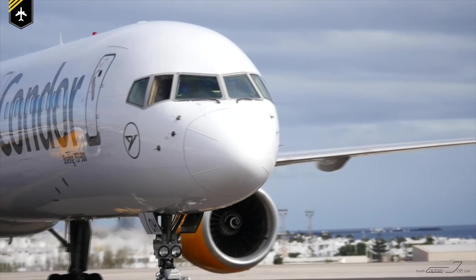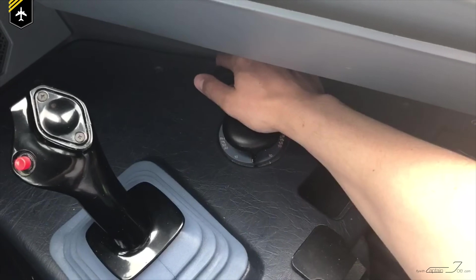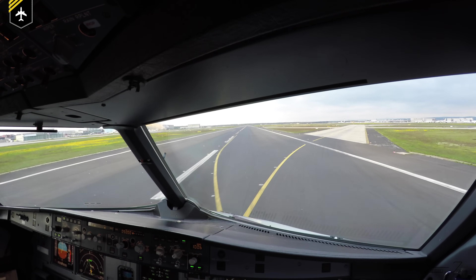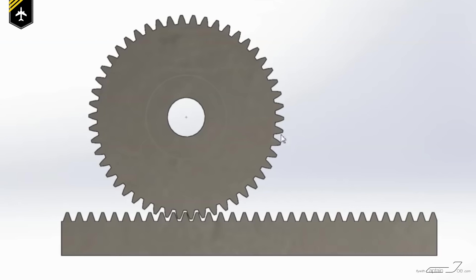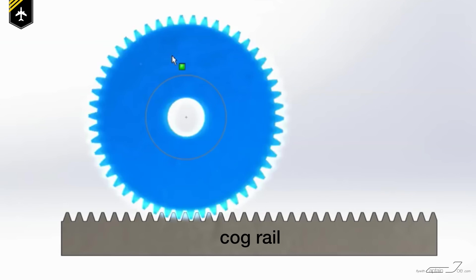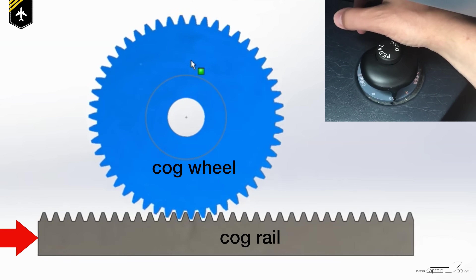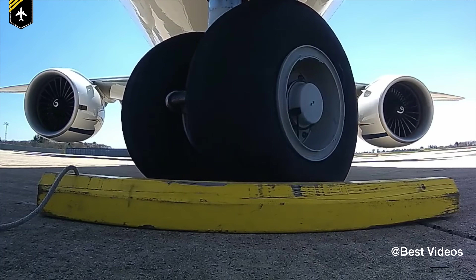The nose wheel steering is powered hydraulically — you could compare it to power steering in your car. Next to your side stick you have this little tiller, which you can turn left and right. As you turn the tiller, hydraulic fluid is forced into a cylinder. Within the cylinder sits a cog rail, which can be moved in either direction depending on your input. The cog rail passes along a cog wheel, which is directly connected to the nose wheel. So as you move the tiller to either side, you control a valve which opens up, and hydraulic fluid pushes the cog rail, which turns the cog wheel and then turns the nose wheel.